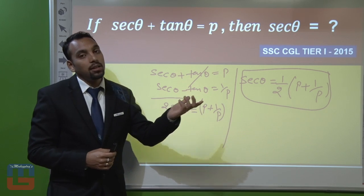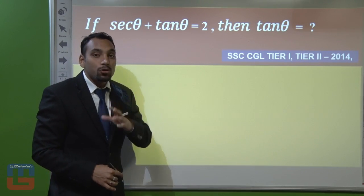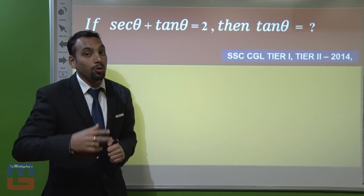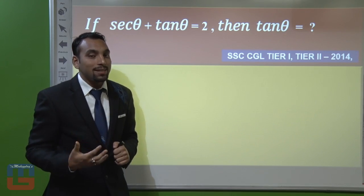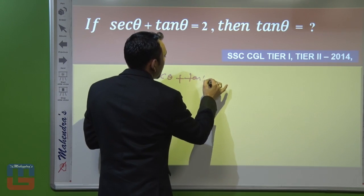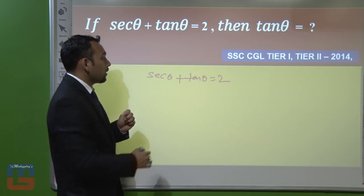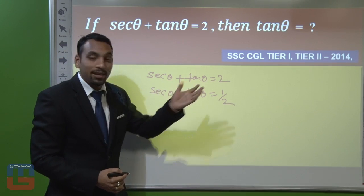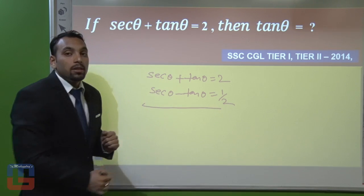The trick to always remember is: if sec θ + tan θ = p, then sec θ − tan θ = 1/p. Now let us see the next question. This question was asked in SSC CGL Tier 1 and Tier 2 in the same year 2014 — which means it is very important as SSC gave it twice. We are given sec θ + tan θ = 2, and we have to find the value of tan θ. Using our relation, sec θ − tan θ = 1/2.